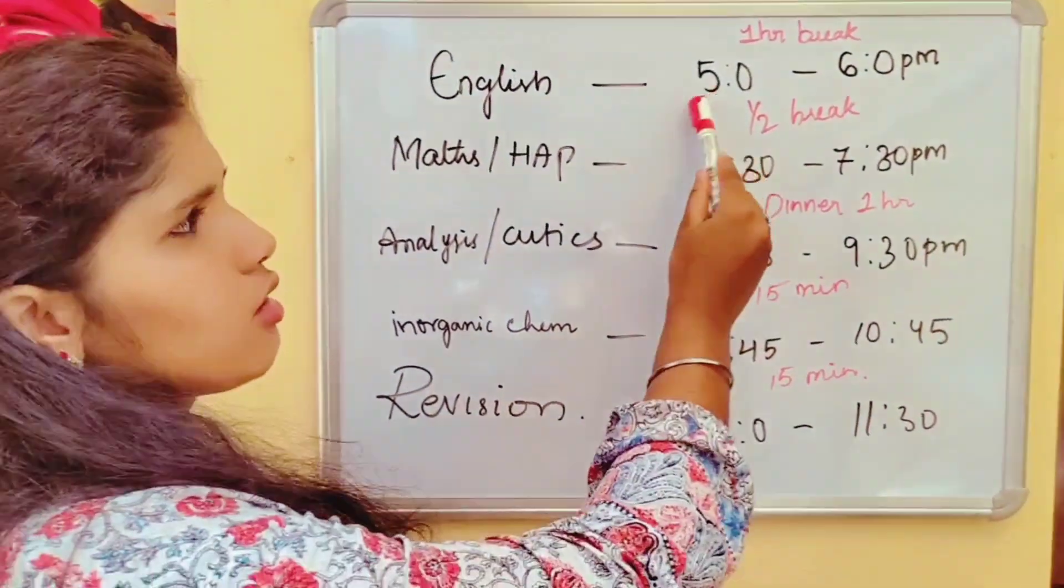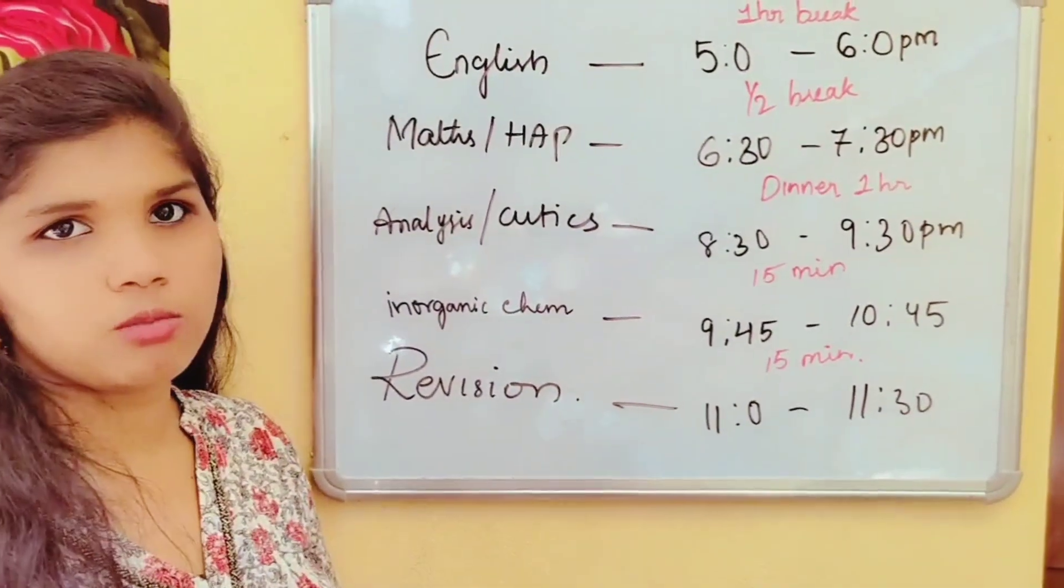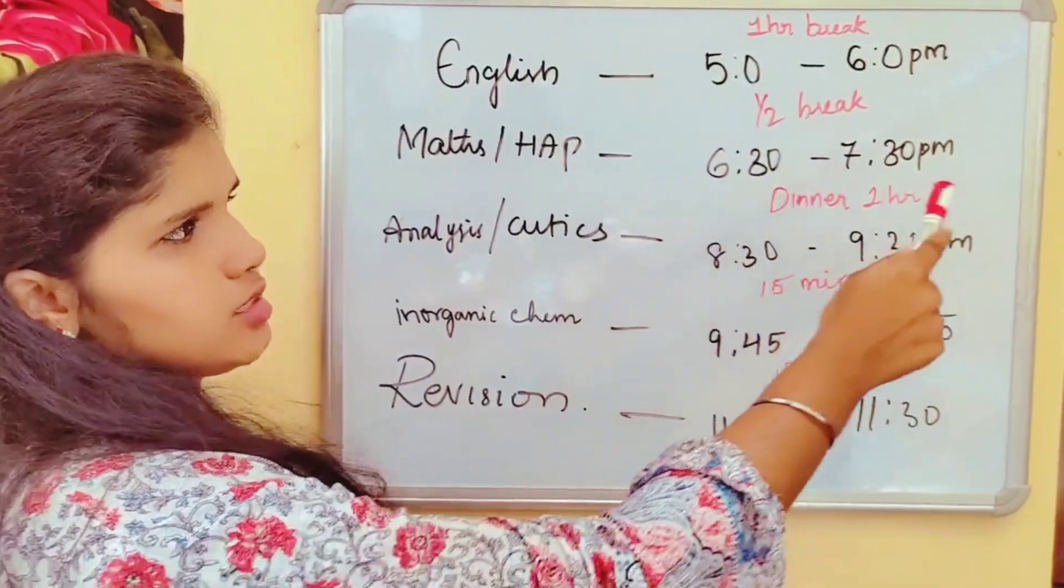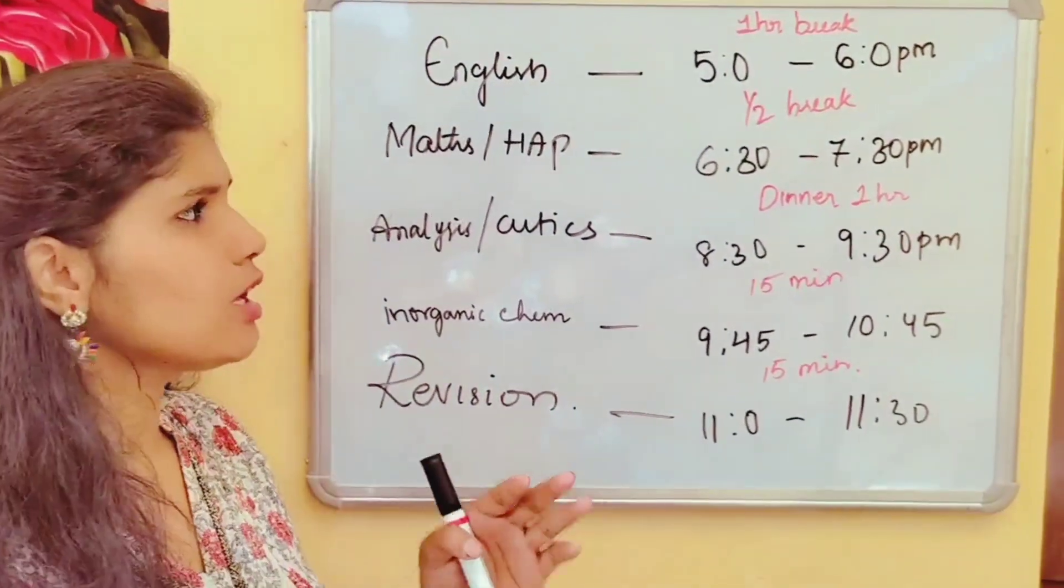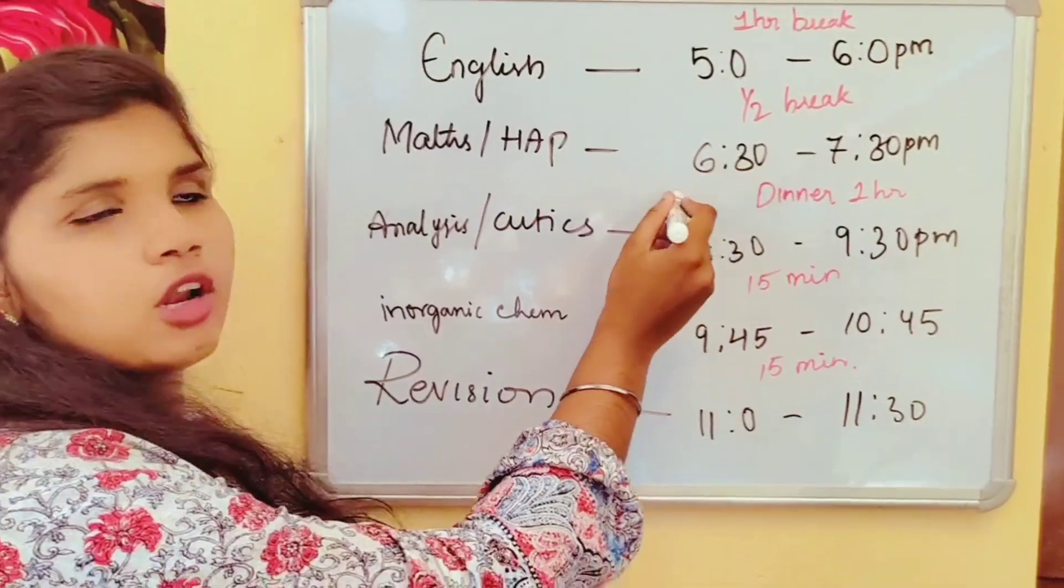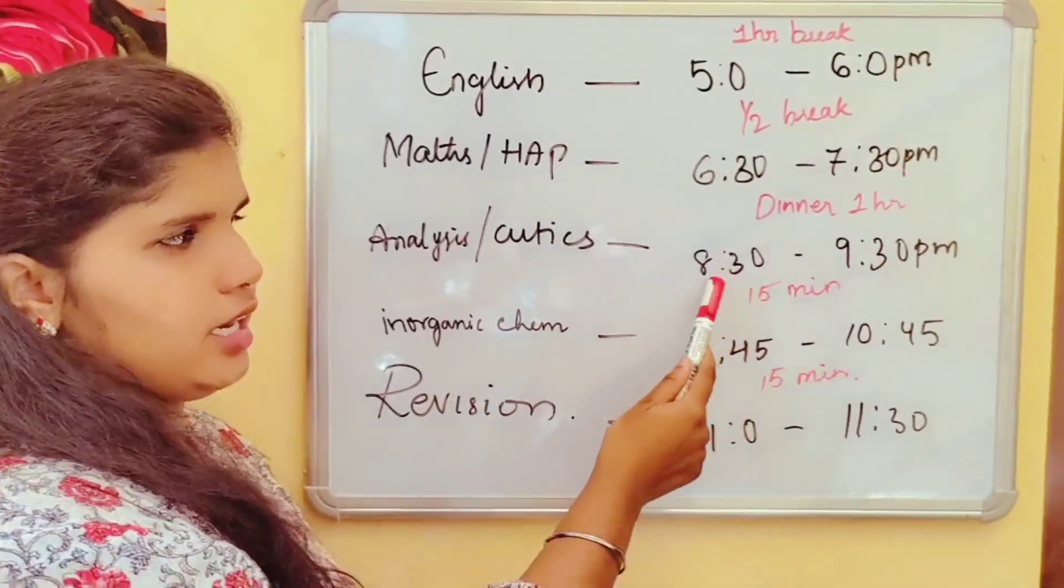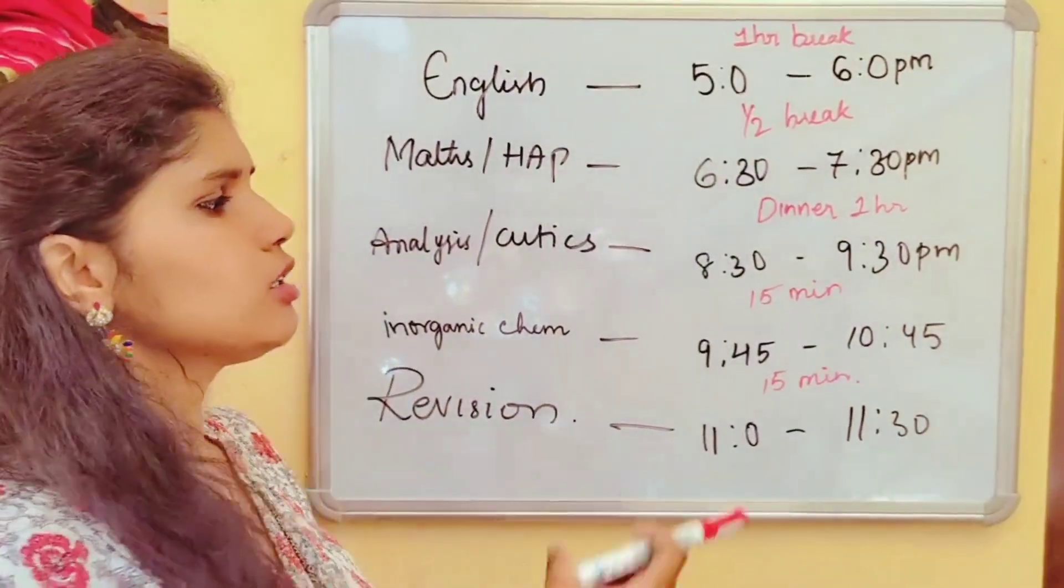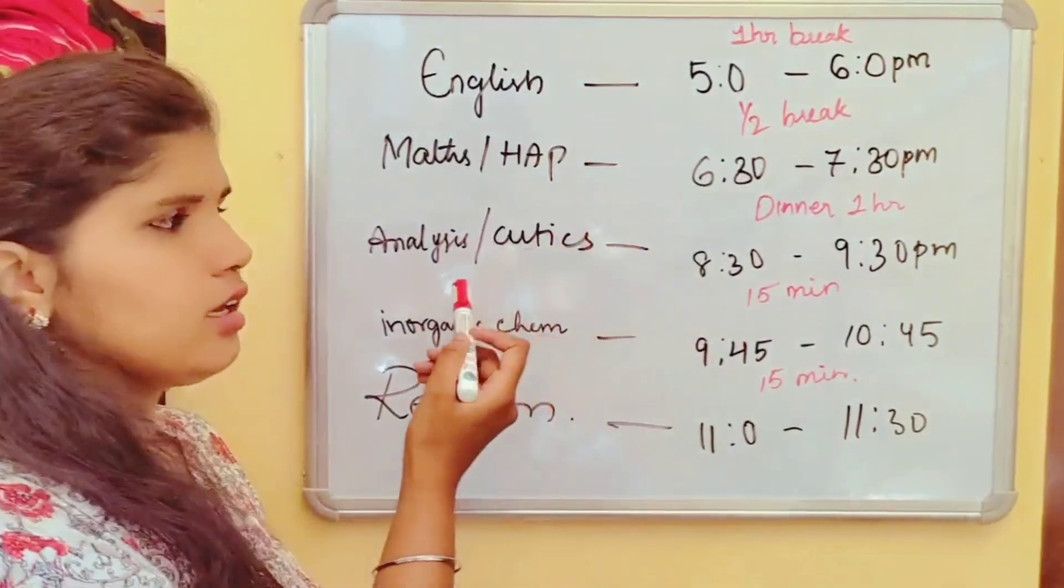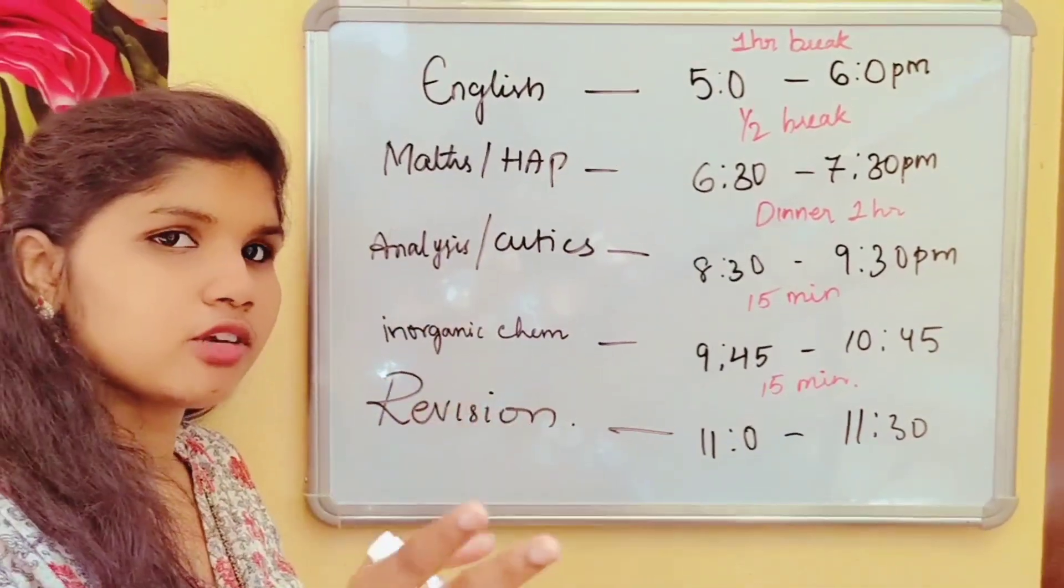So 5 o'clock to 6 o'clock, then half an hour break. Then 6:30 to 7:30. We have Maths and HAP, the subjects. Then after 7:30 to 8:30 we have one hour gap, then we have dinner gap. So 8:30 to 9:30 we have analysis and cubics, the subjects.